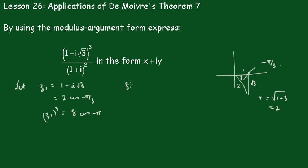Now z2 equals 1 plus i. Fairly easy one to work out. That's 1, 1, root 2 is your modulus. And pi upon 4 is your argument. So this becomes root 2 cis pi upon 4. And we square that we get 2 cis pi upon 2.